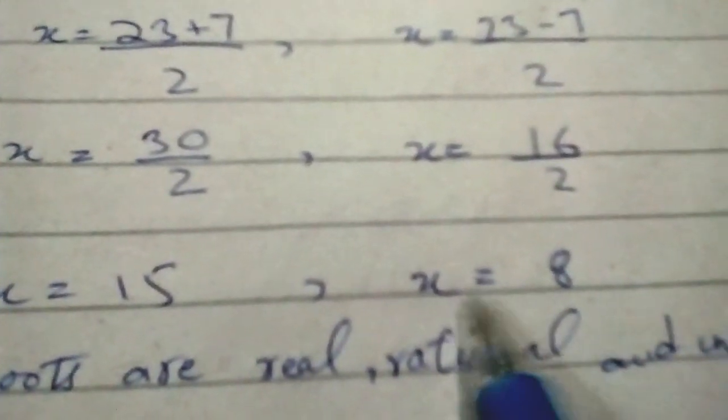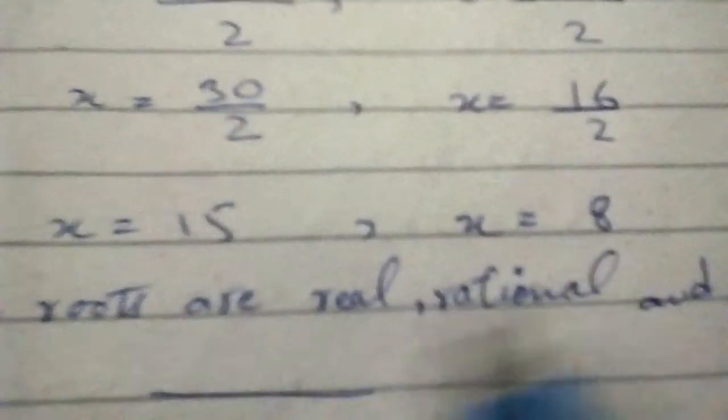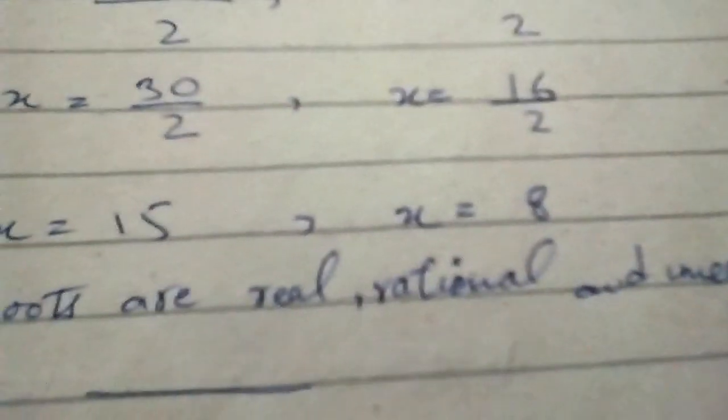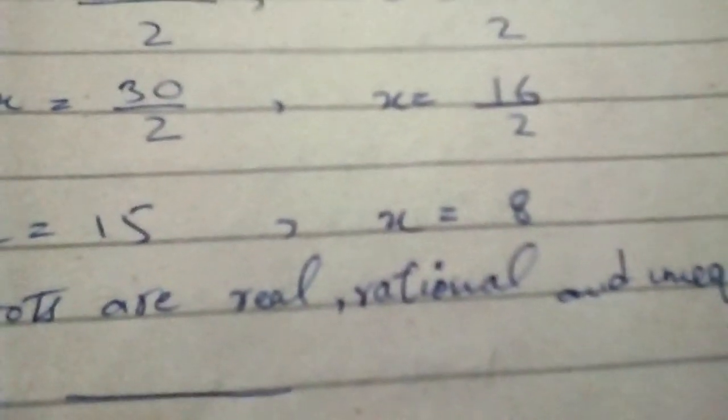So x = 15 and x = 8. The roots are real, rational and unequal. This completes question number 2's solution.